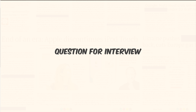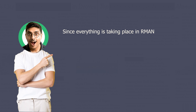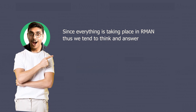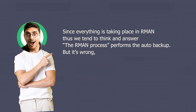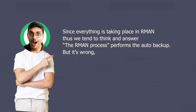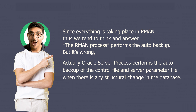If you are preparing for an interview, here is an important question: what process performs the auto backup of the control file in case of structural changes to the database? Since everything is taking place in RMAN, we tend to think the RMAN process performs the auto backup, but that's wrong. Actually, the Oracle server process performs the auto backup of the control file and server parameter file when there is any structural change in the database.